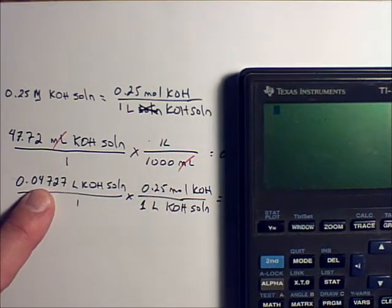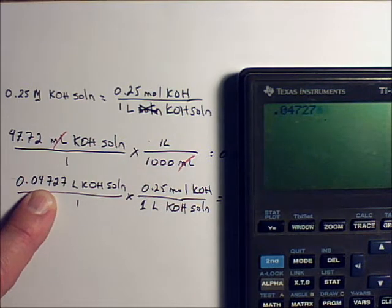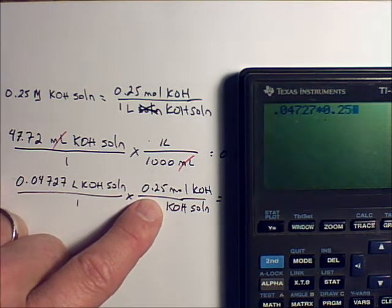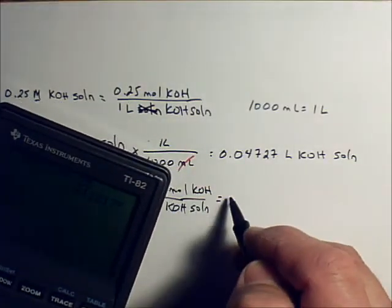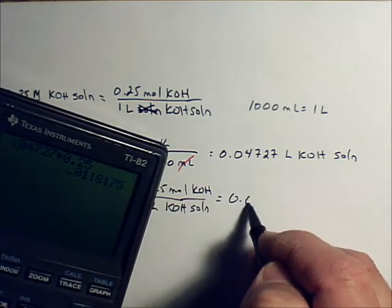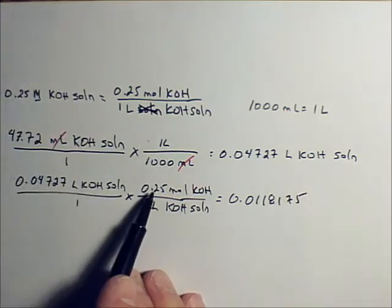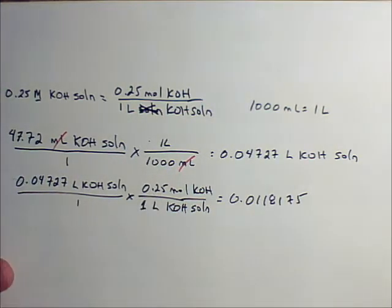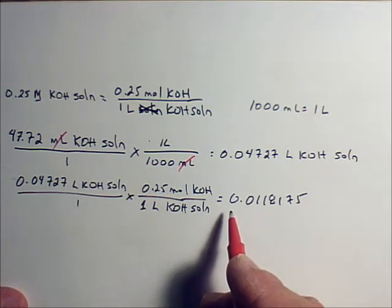So we're going to multiply this number times this number. And we get 0.0118175. And it looks like I need two significant digits.